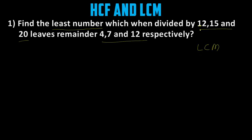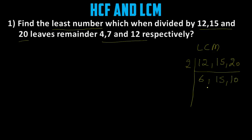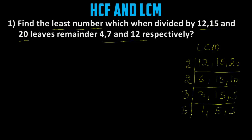Three numbers are given: 12, 15 and 20. So we find LCM of 12, 15 and 20. We start with 2: 2 into 6 gives 12, 15 stays as it is, 2 into 10 gives 20. Again take 2: 2 into 3 gives 6, 15 stays, 2 into 5 gives 10. Again take 3: 3 into 1 gives 3, 3 into 5 gives 15, and 5. Now take 5. So LCM is 60.